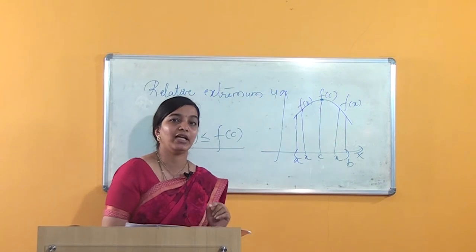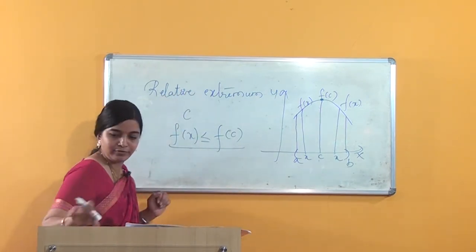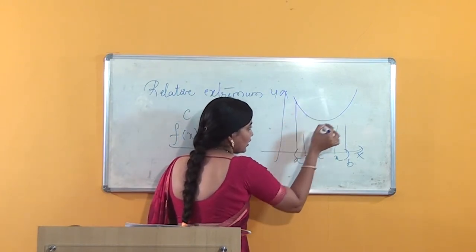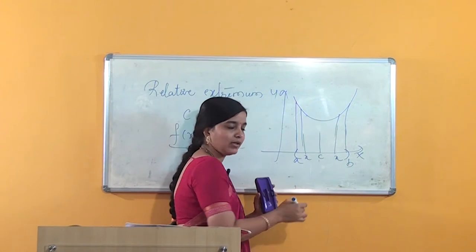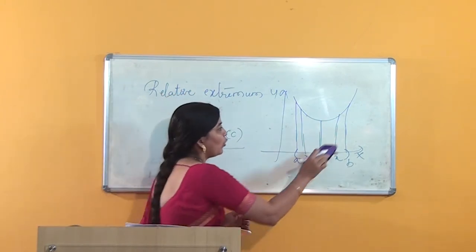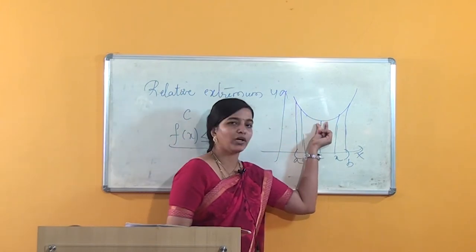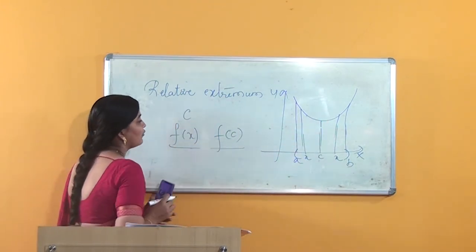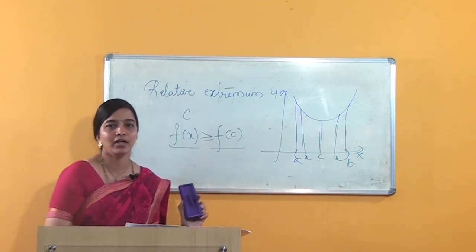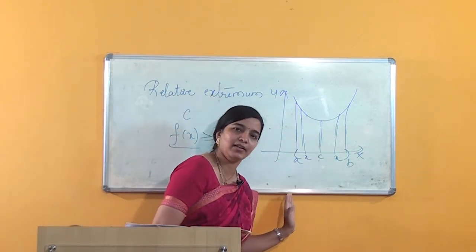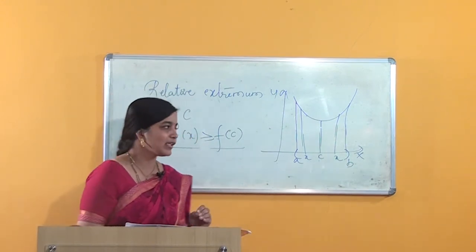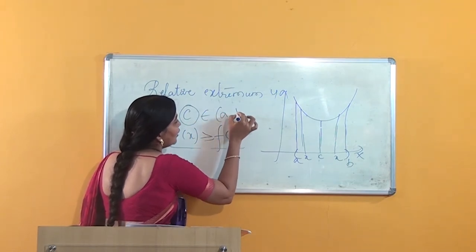One more thing — the relative minimum value. I will consider one more graph. Here also I can consider an open interval (a, b) and a point c, where the value of the graph is at its minimum. When compared to all the values in the graph, the value at this point is minimum. So I can say that if f(x) is greater than or equal to f(c), then it is having the relative minimum value, or local minimum value.